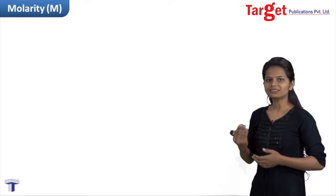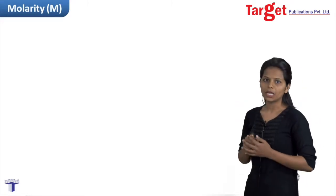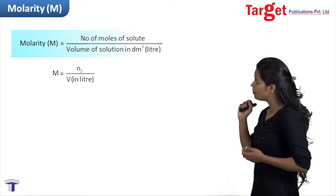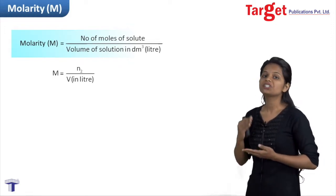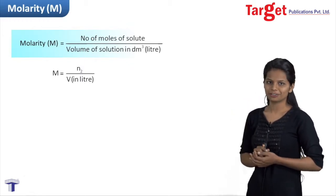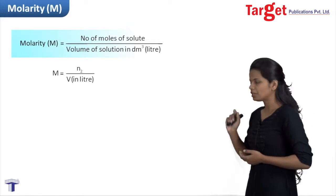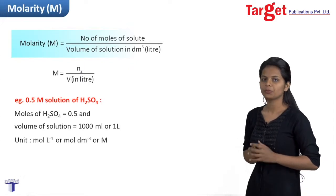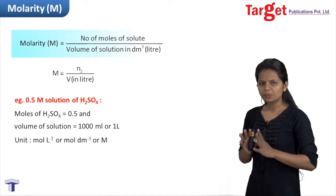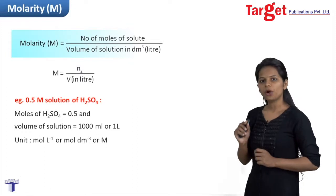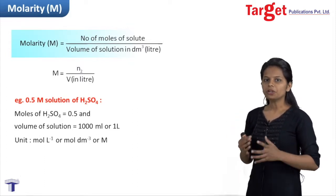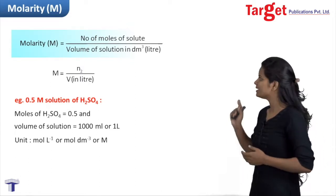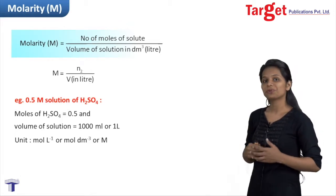The next way of expressing concentration is molarity. Molarity is the number of moles of solute divided by the volume of the entire solution measured in litres. This is symbolically represented as capital M equals N2 divided by volume of solution in litres. For example, a 0.5 molar H2SO4 solution means the volume of the entire solution is 1 litre and you have 0.5 moles of H2SO4 present. The unit of molarity is mole per litre, or mole per dm³, or simply molar (capital M). Since volume is involved, molarity is a temperature-dependent quantity.